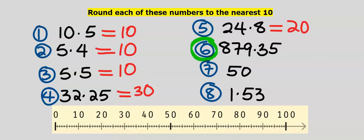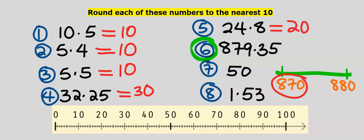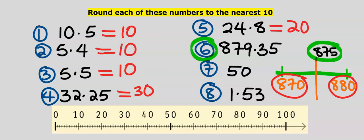Next, let's consider 879.35, which is between 870 and 880. Halfway between them is 875. 879.35 is greater than 875. Hence, our answer is 880.